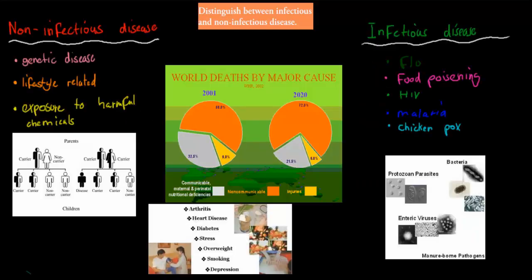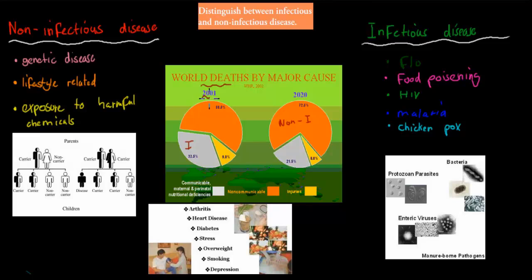Before I start, I want to quickly look at a chart. This chart looks at the world's deaths by major causes. The orange part here is your non-infectious diseases, whereas the grey is your infectious diseases, and the yellow represents injuries. In 2001, 58% of the world's deaths were caused by non-infectious disease, and by 2020 it is predicted to rise to about 72%.